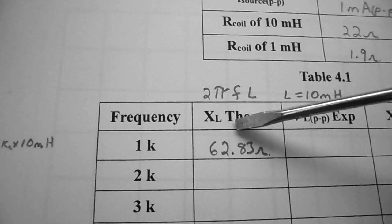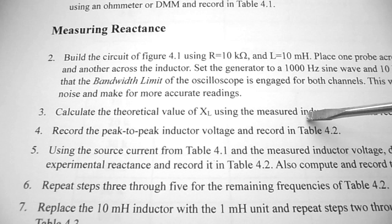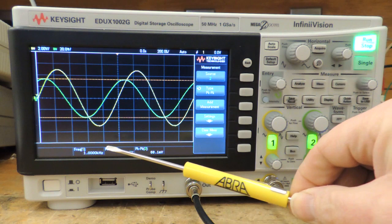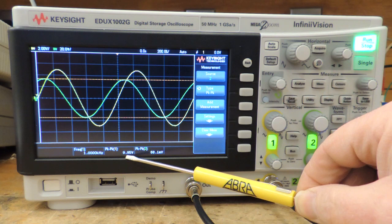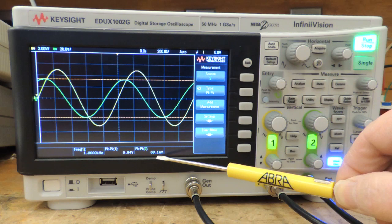Under procedure step number four, we're going to record the peak-to-peak inductor voltage and record it in table 4.2. At 1 kilohertz, my peak-to-peak on channel 1 is close to 10 volts peak to peak. Channel 2, the voltage drop across my inductor, is about 68 millivolts. I'm going to record this in table 4.2.